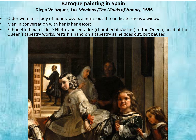The older woman is a lady of honor wearing a nun's outfit that indicates she is a widow, and the man in conversation with her is her escort. The silhouetted man is José Nieto, the aposentador—the chamberlain or usher of the queen, and head of the queen's tapestry works. He rests his hand on a tapestry as he is about to go out, but he is pausing.